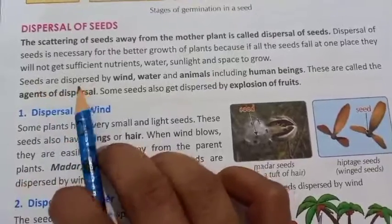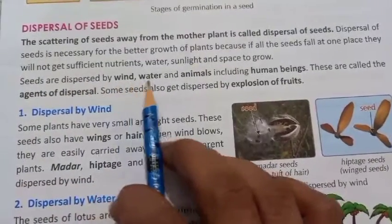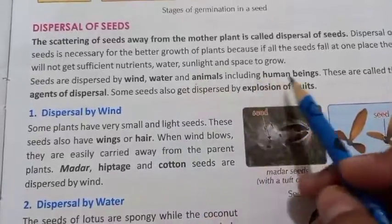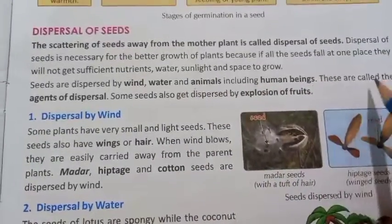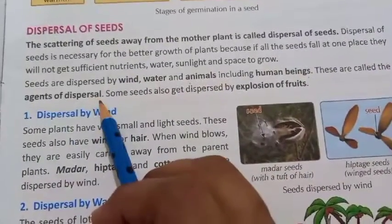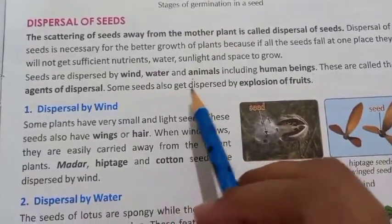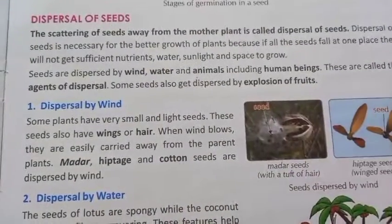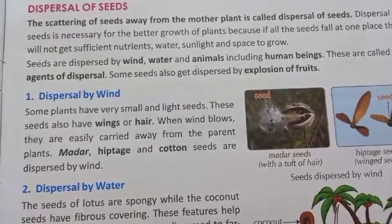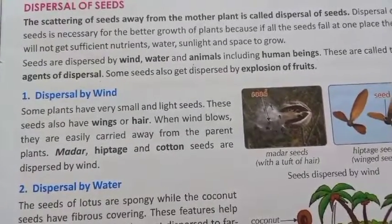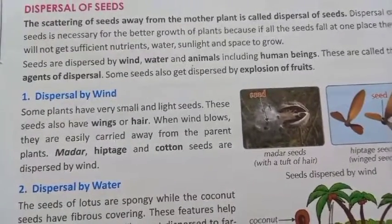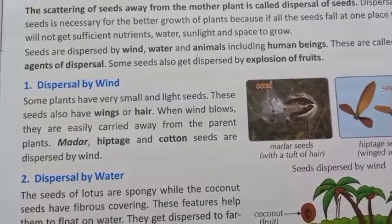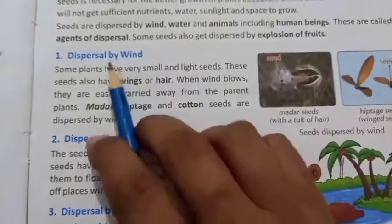Seeds are dispersed by wind, water, and animals including human beings — these are called the agents of dispersal. Some seeds also get dispersed by explosion of fruits. Explosion of fruits means जब fruits पूरी तरह पक जाते हैं और dry हो जाती है उनकी outer covering, तो वो burst हो जाते हैं — उसको बोलते हैं explosion of fruit.